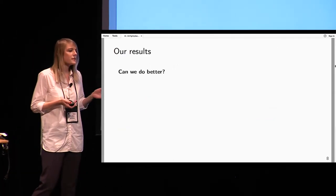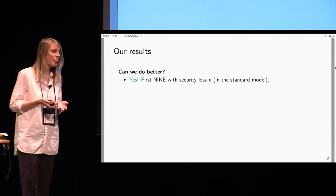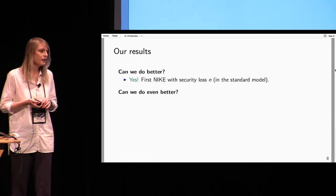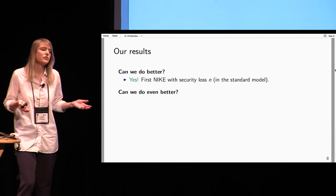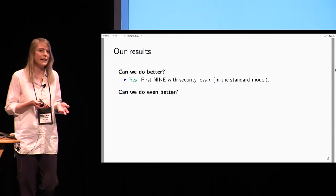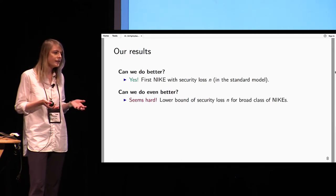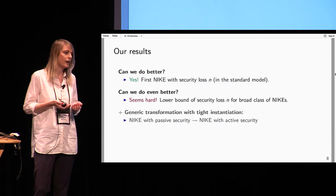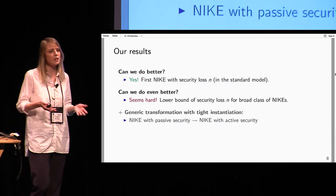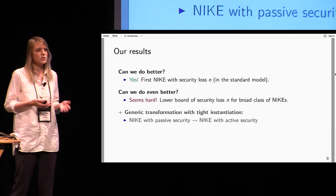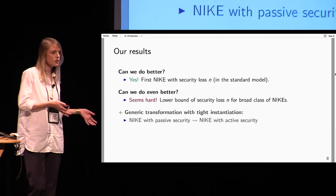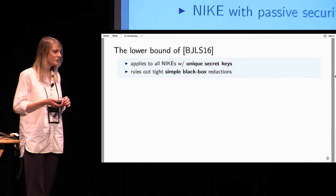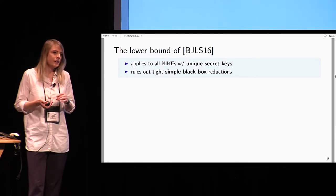So what are our results? We actually achieve a NIKE with security loss that is only linear in the security parameter. Linear is still far from tight — if we have many users, linear is still not ideal — but we give some intuition that this is hard to improve: we prove that for a broad class of NIKEs including ours, this linear loss is inherent. Additionally, because active security is our ultimate goal, we give a generic transformation from any NIKE with passive security to a NIKE with active security, and a tight instantiation for our scheme.